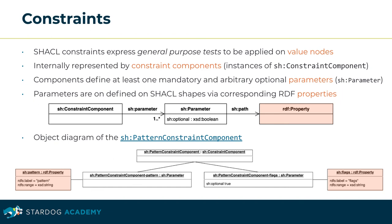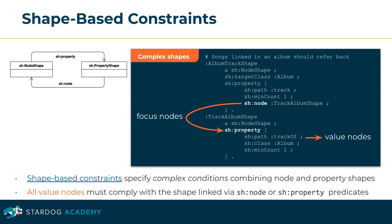SHACL constraints express general-purpose tests applied on value nodes such as data type, node kind, or cardinality checks. SHACL constraints are internally represented by instances of the class 'ConstraintComponent'. Components define at least one mandatory and an arbitrary number of optional parameters. Constraint parameters are specified as RDF properties of the SHACL shape. The pattern constraint component, for example, matches a value node to the regular expression supplied by the mandatory parameter 'pattern'. Shape-based constraints specify complex conditions by combining node and property shapes. In a given example, the anonymous property shape in the album track shape delegates testing of value nodes retrieved from property 'track' to the node shape 'TrackAlbumShape'. All of the value nodes must comply with the shape linked via the 'node' or 'property' predicates.